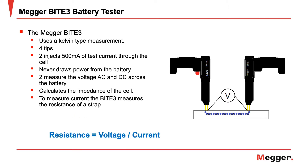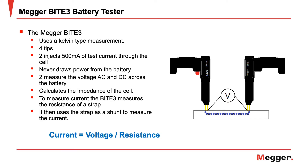When measuring float and ripple current, the Byte 3 first measures the resistance of the intercell connection, or the strap. It then uses the strap as a shunt and measures the AC and DC voltage across it. It can then calculate both the AC ripple current and the DC float current, so there's no need for an external CT.